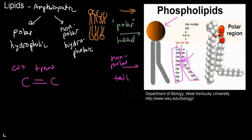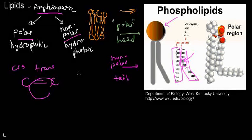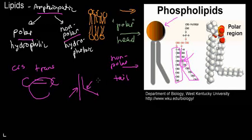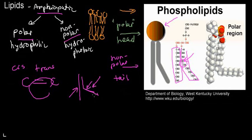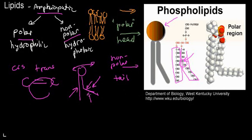To recap the lipids: they're amphipathic, with a polar domain and a nonpolar domain. They may have a double bond, which creates a kink. If one chain has no double bond and another does, the one with the kink occupies more space.